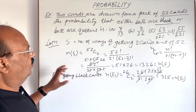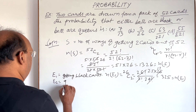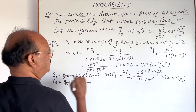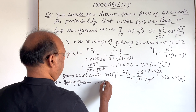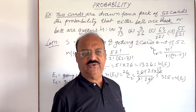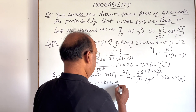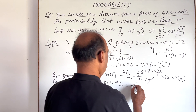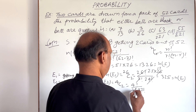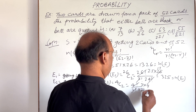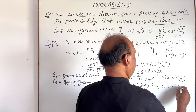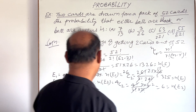Now let E2 be the event of getting both cards as queens. In total there are four queens in a pack of 52 cards, so n(E2) = 4C2. This equals 4! / (2! × 2!). The 2! cancels out, giving 3 × 4 / 2 = 6. So n(E2) = 6.